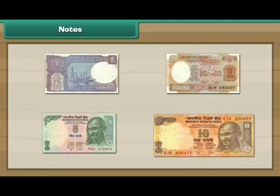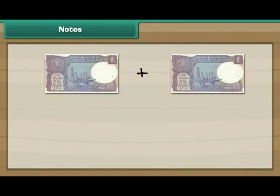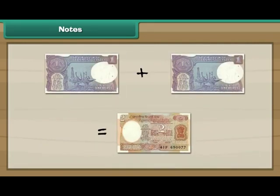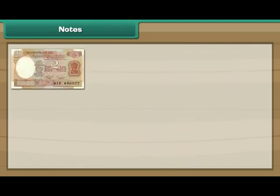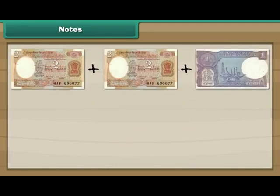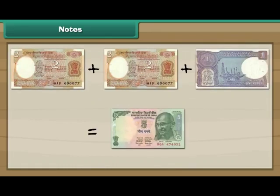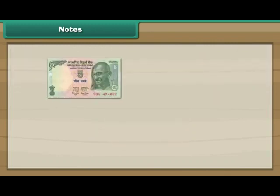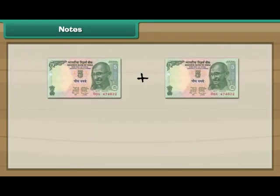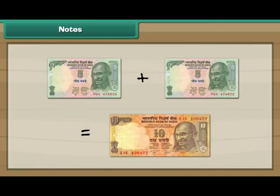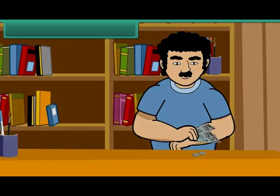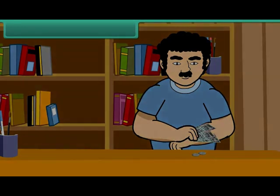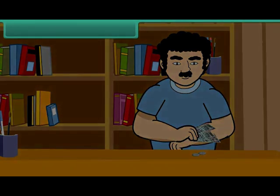Let us now look at the different combinations of notes. 2 one rupee notes make 2 rupees. 2 two rupee notes and one 1 rupee note make 5 rupees. 2 five rupee notes make 10 rupees.